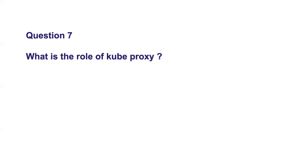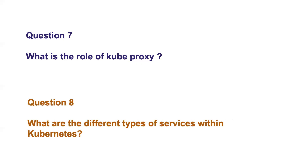Question number seven: what is the role of kube-proxy? Kube-proxy takes care of networking in Kubernetes. If you want to talk to an application deployed in Kubernetes, kube-proxy handles that. It can be configured in multiple ways — the most common being IP tables. Whenever you deploy a container or a pod, IP tables get updated. Kube-proxy manages those IP tables, so that any internal or external access to a pod follows the rules written there, making it a key component for handling communication in Kubernetes.